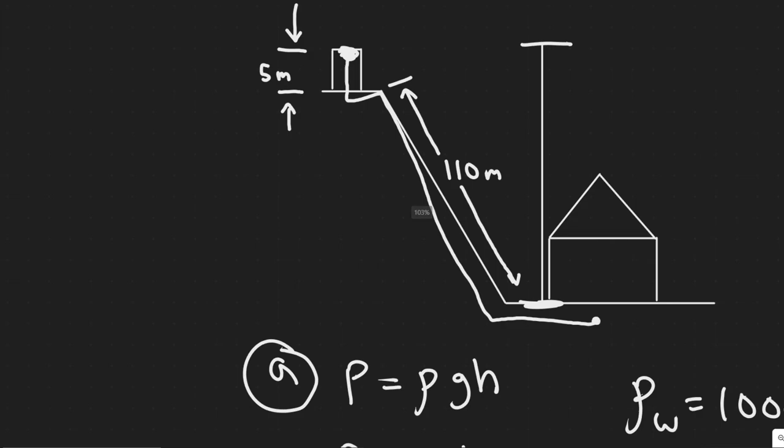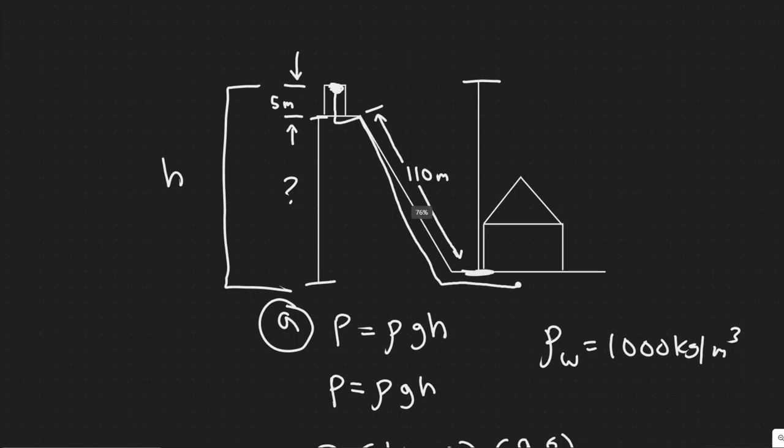So we know this distance is five meters, and then we're going to need the rest of that distance, so basically from here to there. So basically we can find this distance right here. So if we can find out what this distance is here and then add it to five meters, that's going to be the total vertical distance or h. So this whole thing is h, and that's what we want to find.